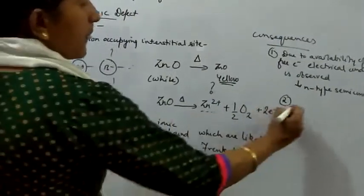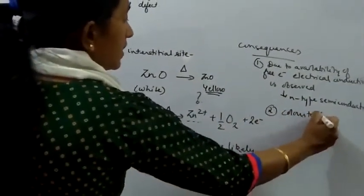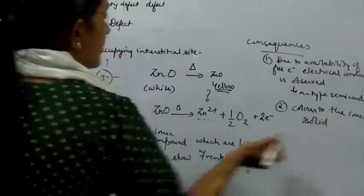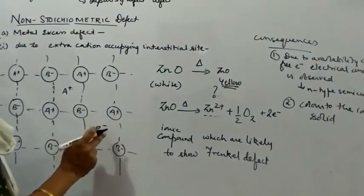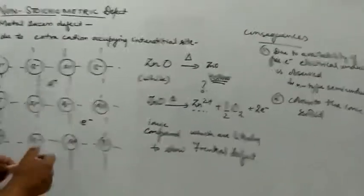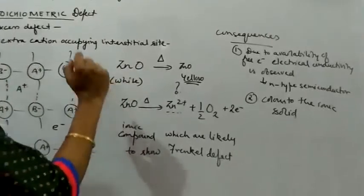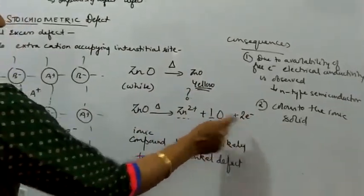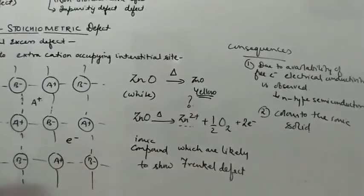The second consequence is that since we have got the electrons, they will impart color to the ionic solid. This color is shown because the electrons get excited to a higher energy level and while returning, they emit the radiation they had absorbed. So zinc oxide, generally white, shows yellow color because of the electron released and occupying the interstitial site.